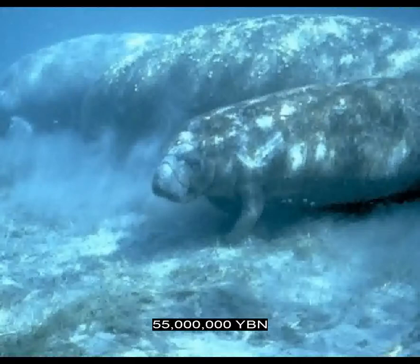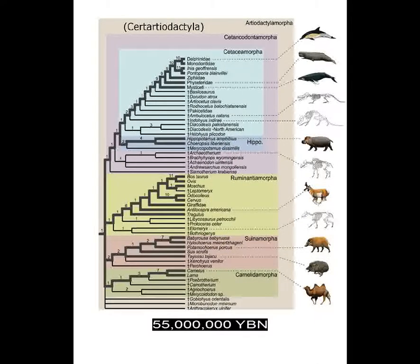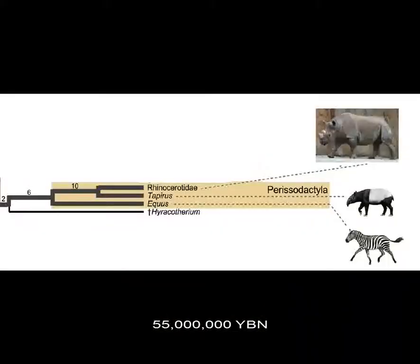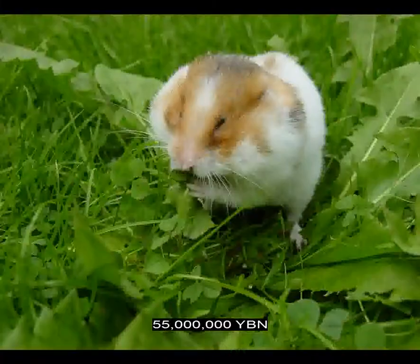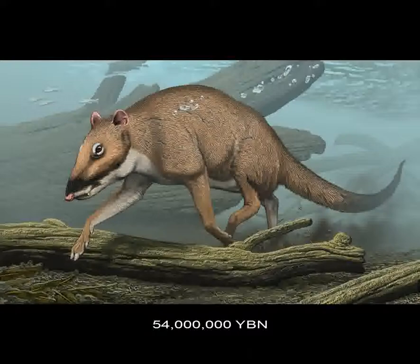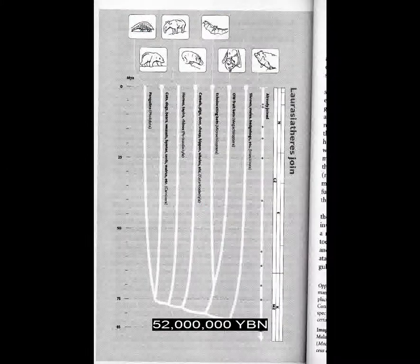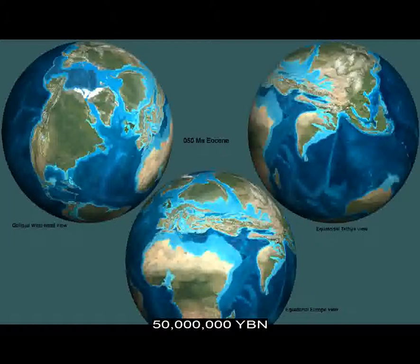Afrotheria: elephants. Afrotheria: manatee and dugong. Laurasiatheria Cetartiodactyla evolve — ancestor of all Artiodactyla, also called even-toed ungulates: camels, pigs, ruminants including deer, giraffe, cattle, sheep, and antelope, hippos, and all Cetacea — whales and dolphins. Laurasiatheria Perissodactyla evolve — also called odd-toed ungulates: horses, tapirs, rhinos. Rodents Rodentia. Rodents Myomorpha: rats, mice, gerbils, voles, lemmings, hamsters. Birds Psittaciformes: parrots. Horses evolve. Last common ancestor between hippos and dolphins and whales. Earliest marine mammal. Laurasiatheria Chiroptera: fruit bats and echolocating bats. Rodents: old world porcupines. Himalayan mountains start to form. Primates lorises, bush babies, and pottos. Ambulocetus: an early whale.